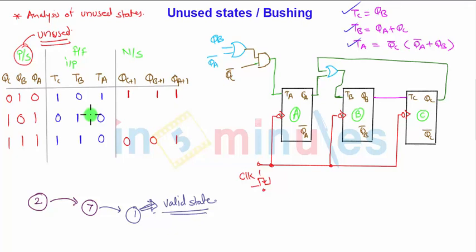...as it is. So QC is 1, TB will be toggling from 0 to 1, and TA 0 copying as it is to 1. So again, state number 5 is also going to state number 7.